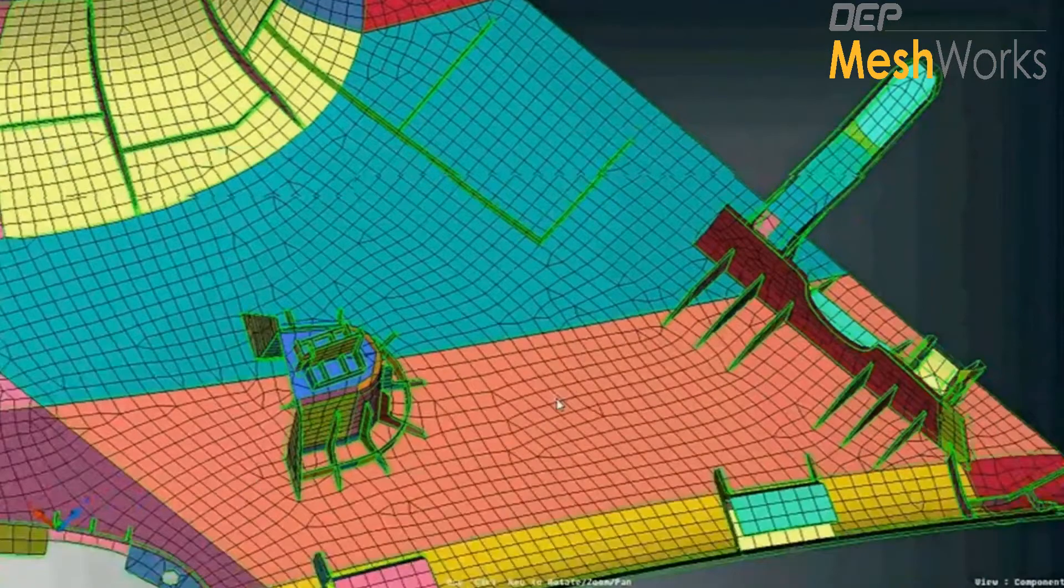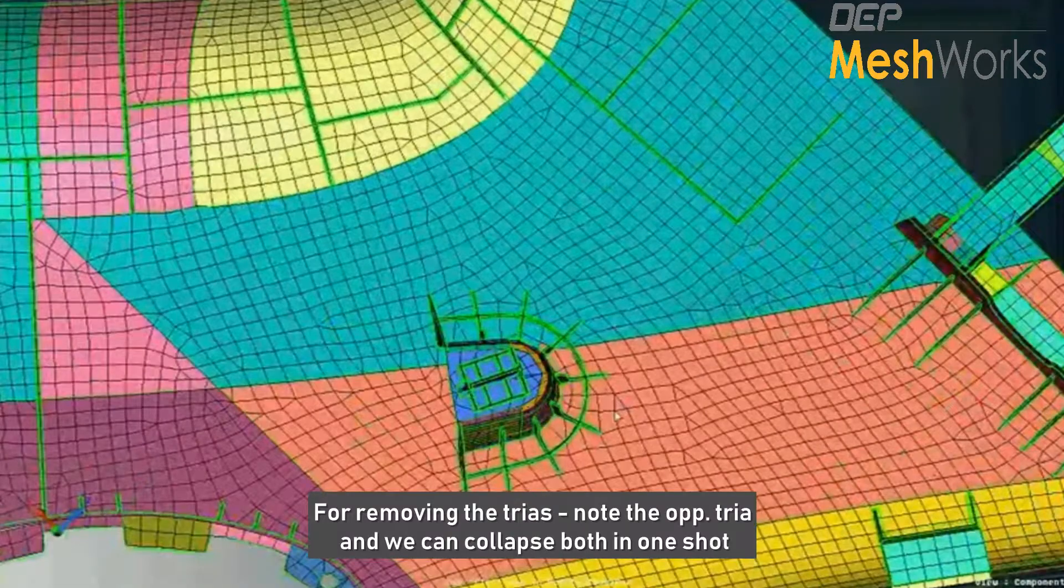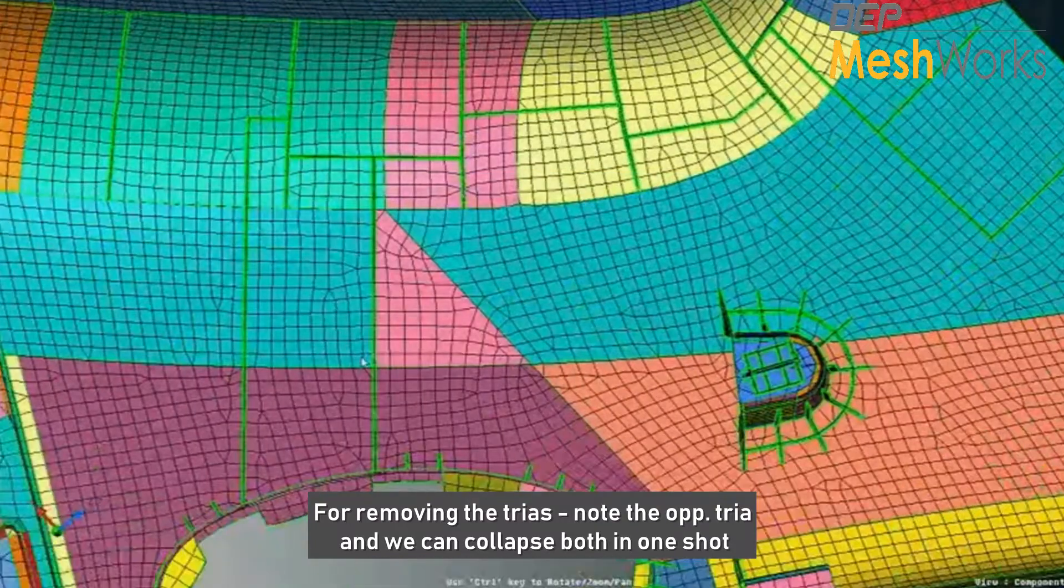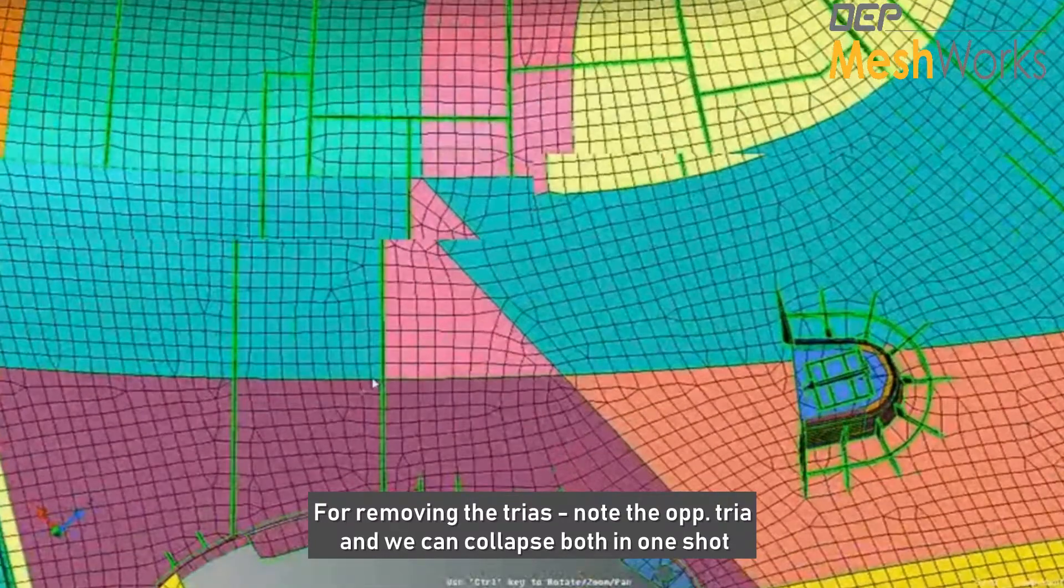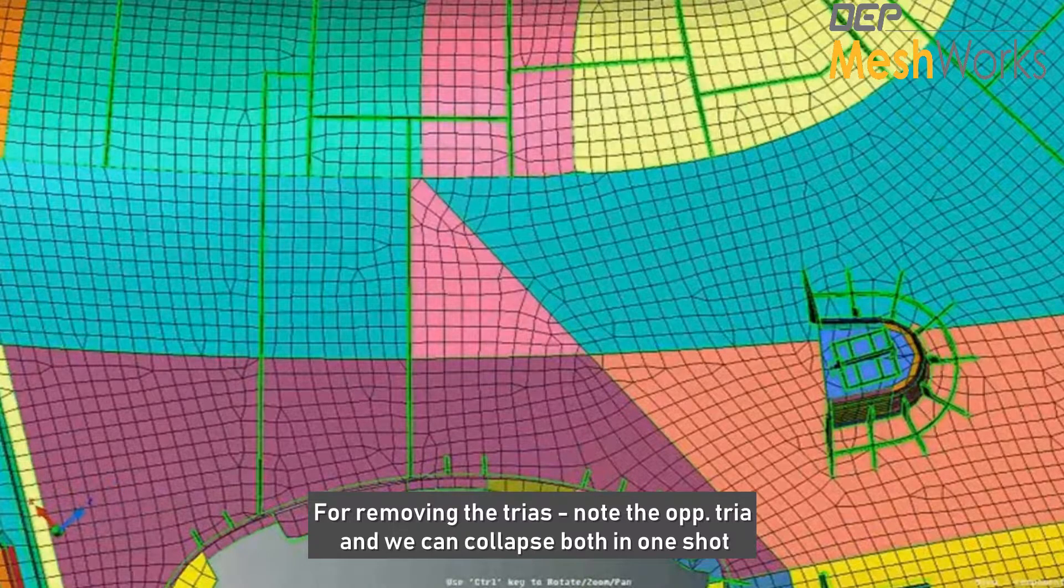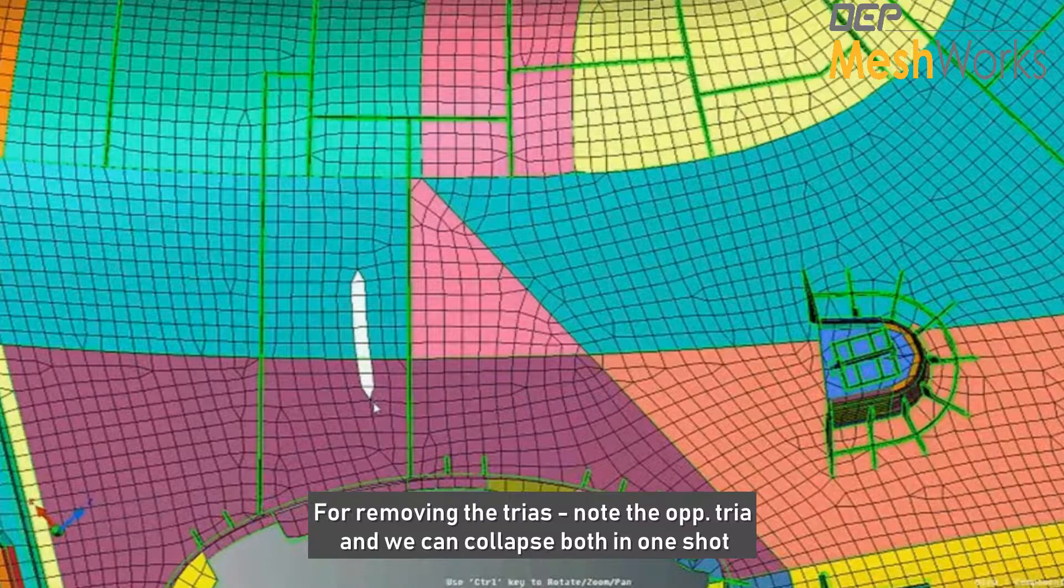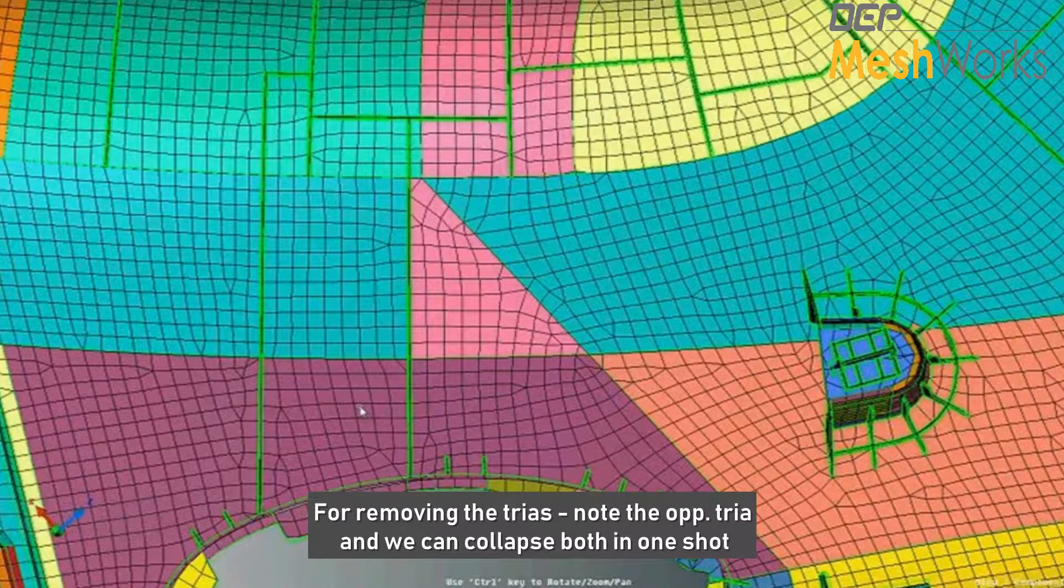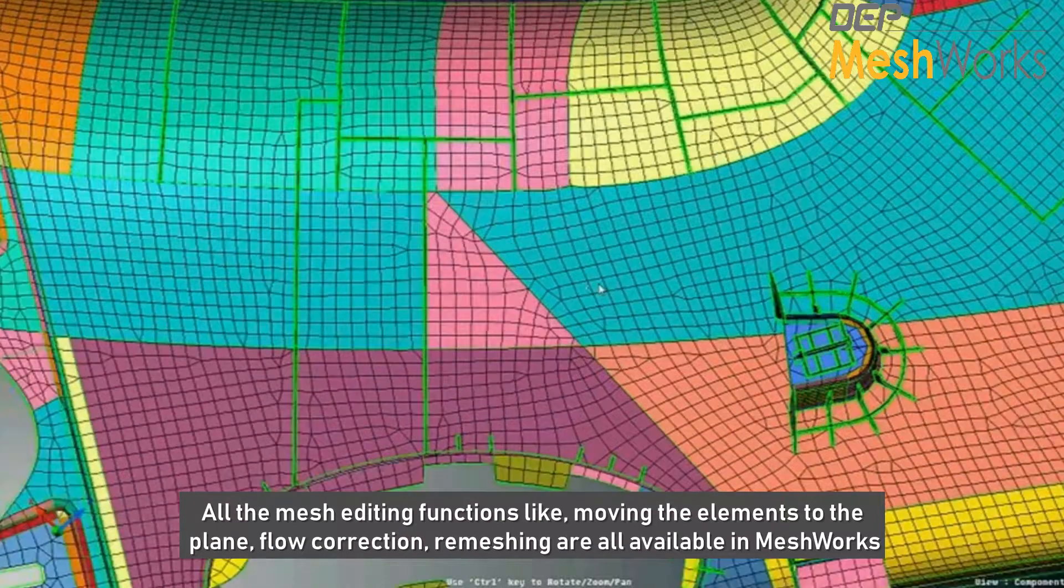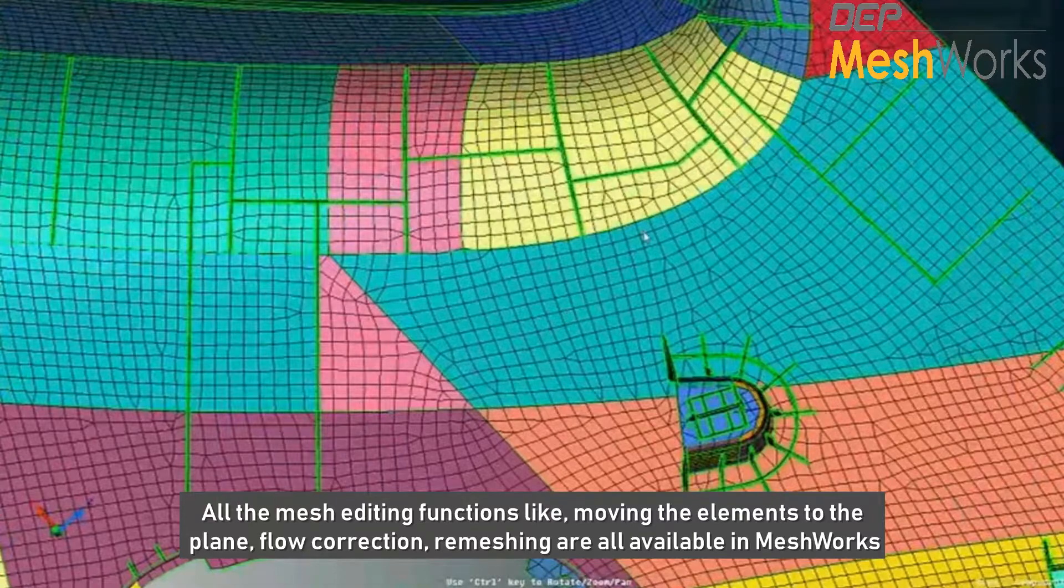And similarly, if the user wants to remove the trias—in this case it is a node-supposed tria—we can just select this element, find the opposite tria, and we can just collapse them in one shot. All the mesh editing functions, such as moving the elements to the plane and doing all the necessary flow correction,